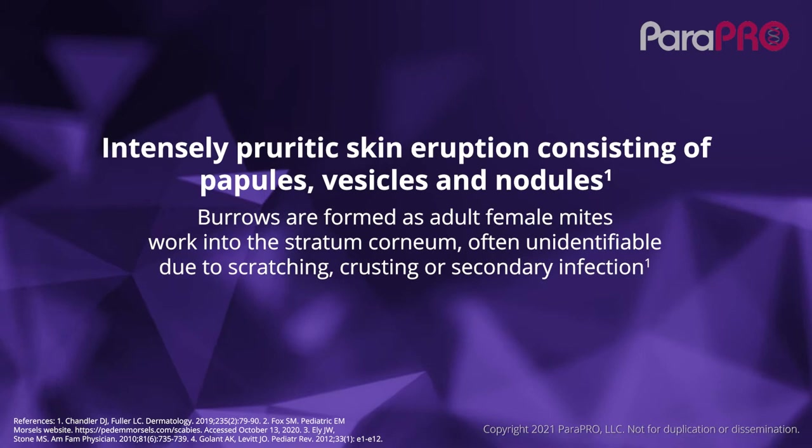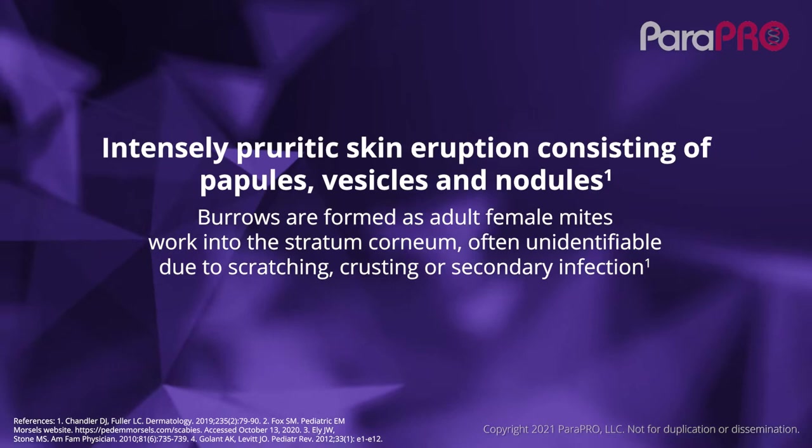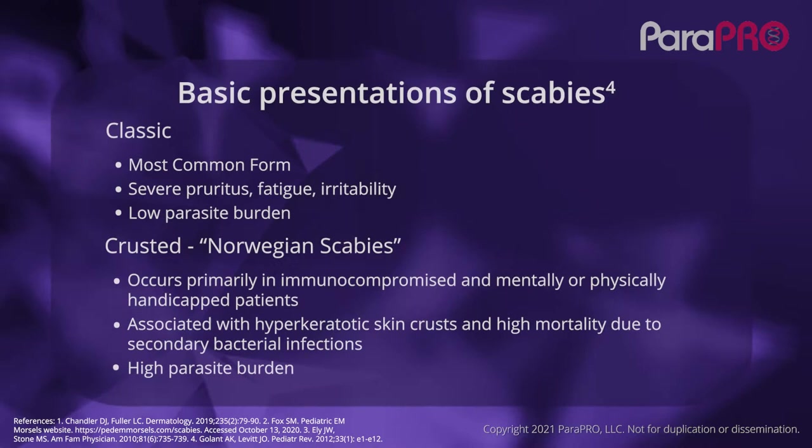The classical presentation of scabies is that of papules, vesicles, and nodules. The burrow, which is the tunnel lesion, is also pathognomonic and is often found in the finger webs.